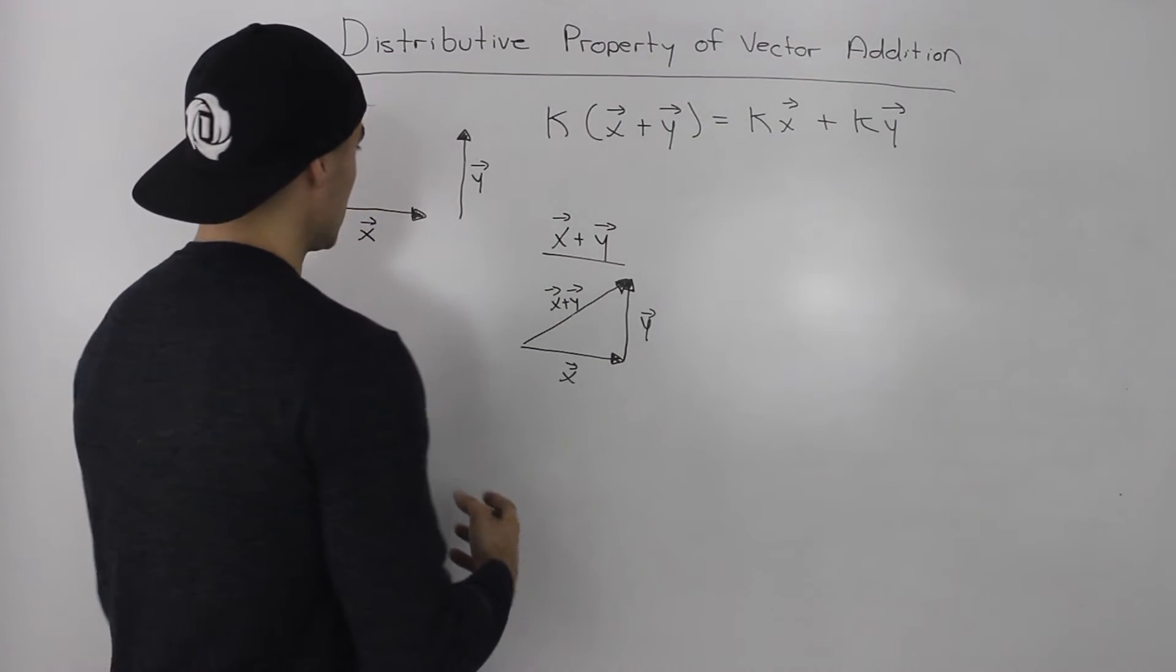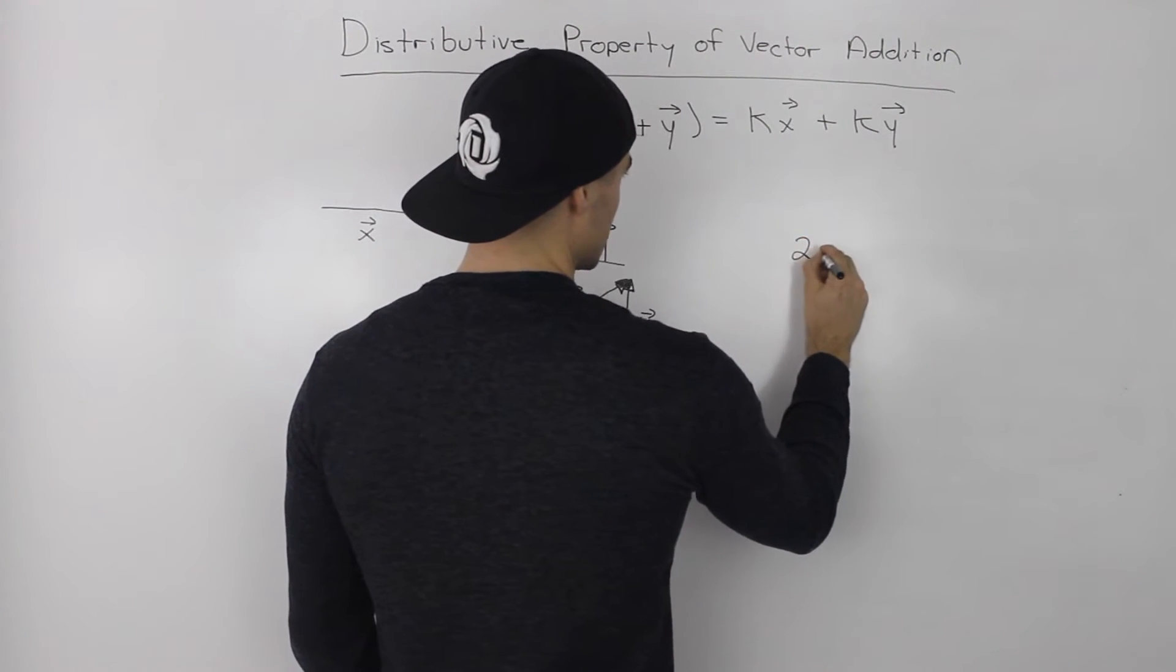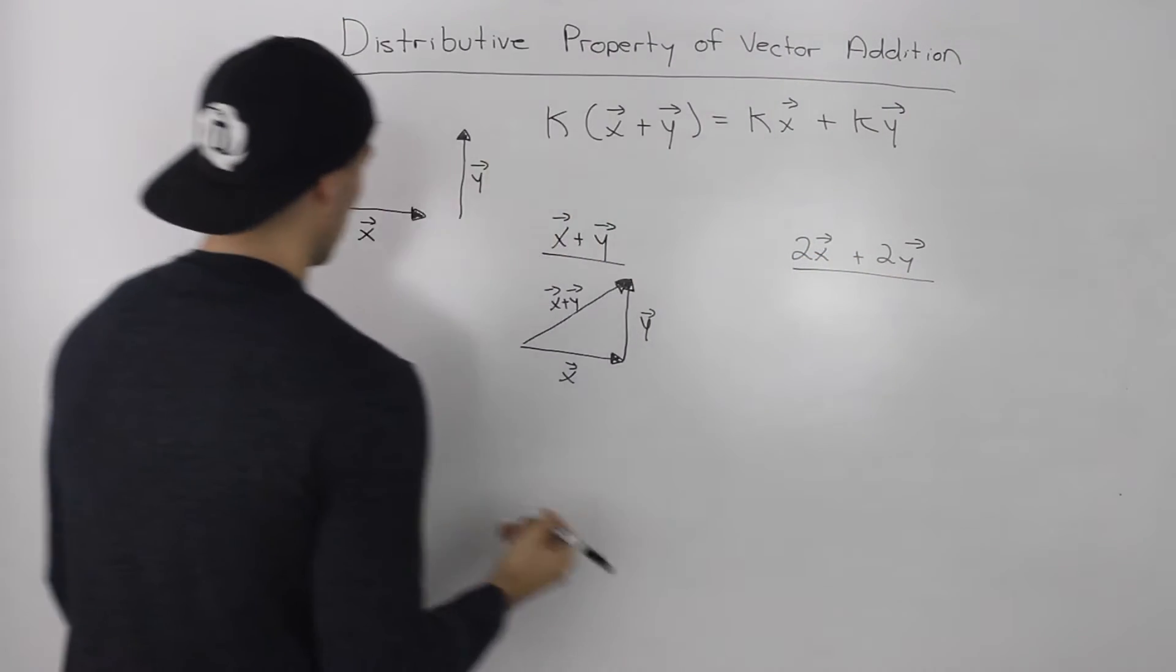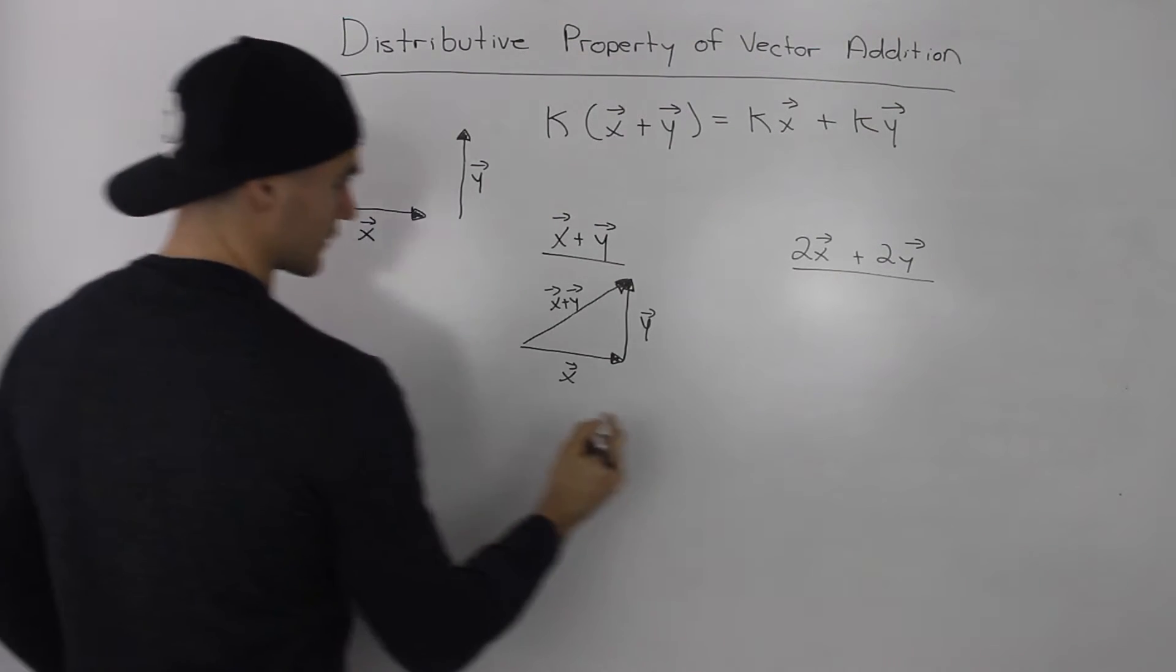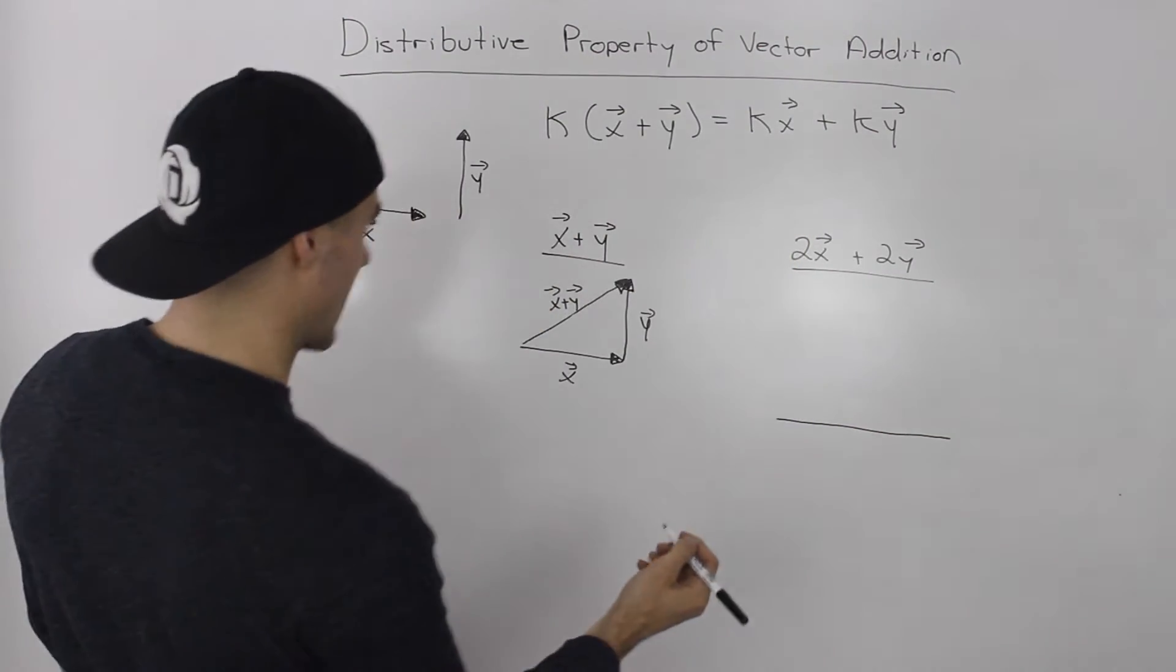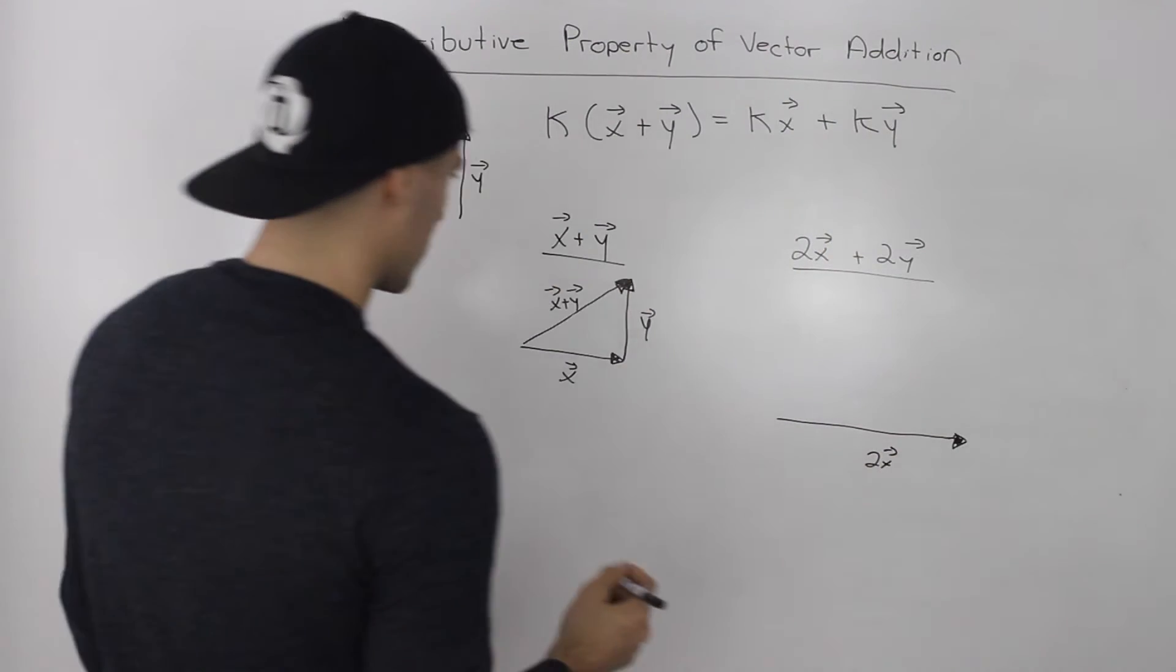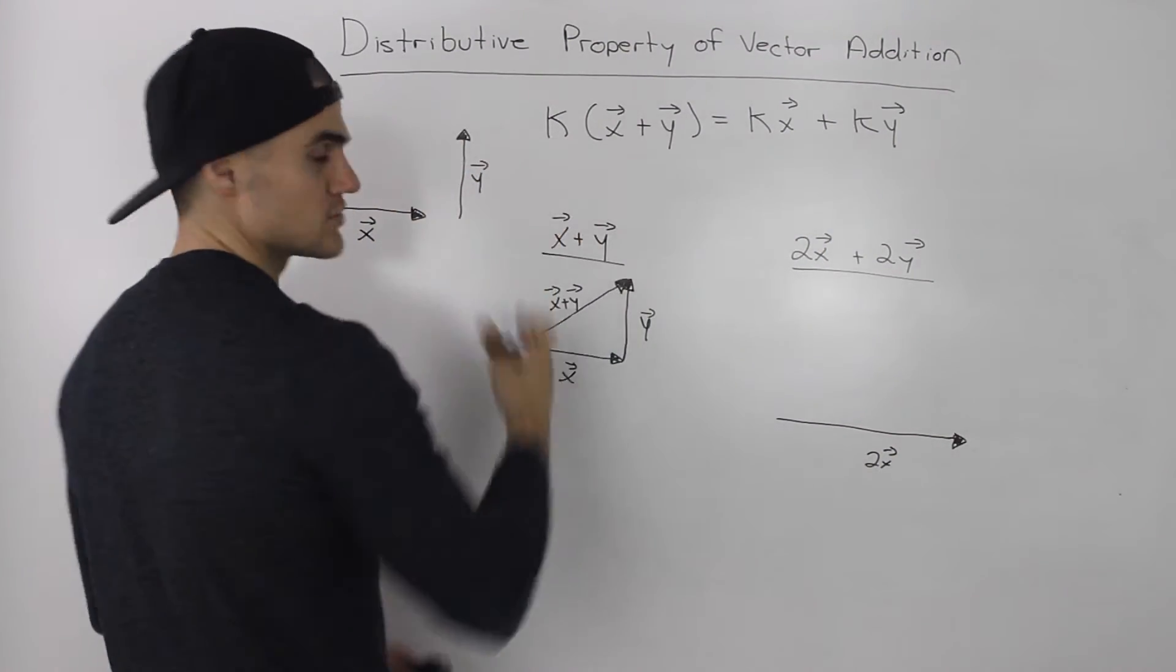Now let's say that we took each vector and multiplied it by 2 and then added them together. So let's say I want to add 2x plus 2y. Well, 2x would be going in the same direction, it would just be double the magnitude of vector x. So let's say it's about that long, I'd say that's about to scale. And then 2y would be double the magnitude of vector y.